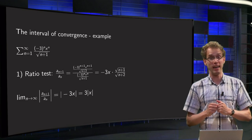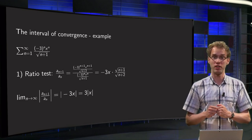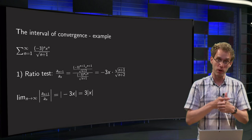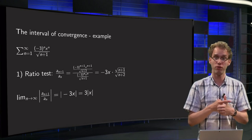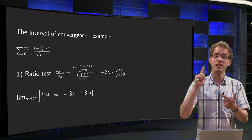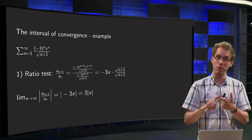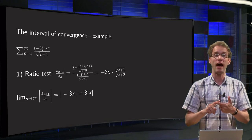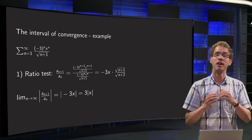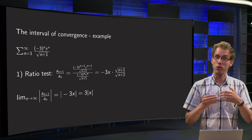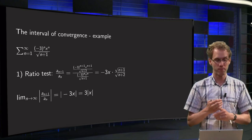How can you determine the interval of convergence of a power series? Step 1: use the ratio test and find the radius of convergence. Step 2: check both endpoints. And step 3: wrap everything up. Let us take a look at a more complicated example in this video.